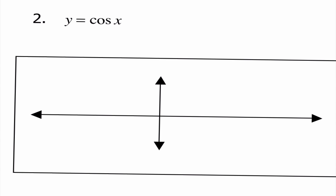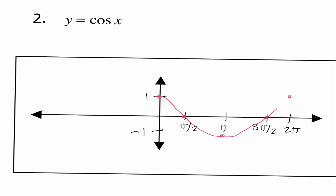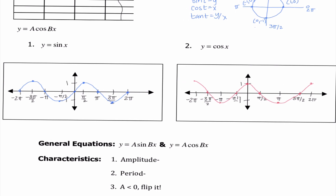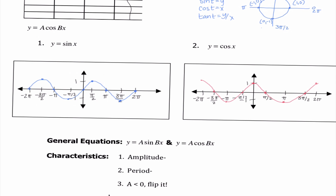For cosine, I'm going to graph those same four quadrantal angles and mark 1 and -1. Cosine starts at 1 and then goes to 0, -1, 0, 1. Repeating this pattern on the left side, it goes back to 0, -1, 0, 1. We definitely notice some patterns here — the graph continues left and right forever. If I took the sine graph and did a horizontal shift to the right by pi over 2, it would look like the cosine graph.